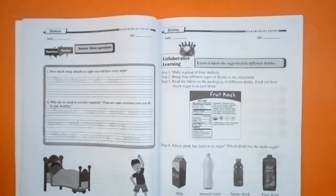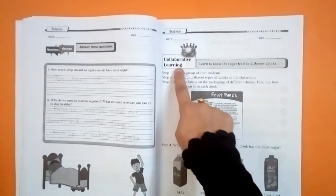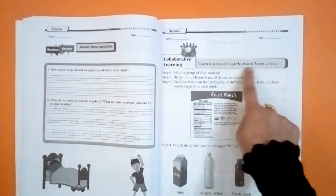Well students, now open your workbook of science page number 17. First of all, you have to write your date, then day, then come to the topic collaborative learning. Learn to know the sugar level in different drinks.